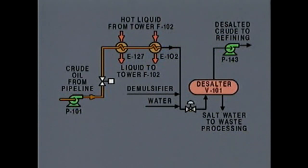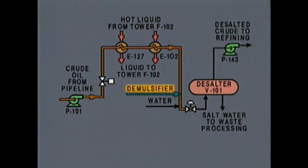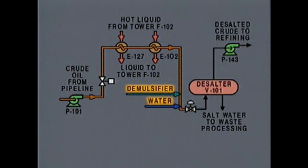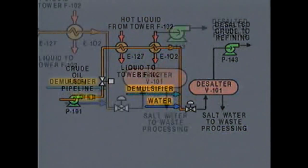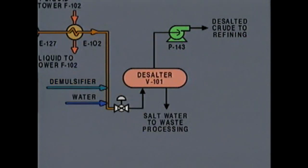As we trace the oil flow leaving heat exchanger E-102, we see that it flows past a demulsifier addition line and a water addition line. The demulsifier and water are added to the oil to help the desalter do its job. Next, the oil goes through a control valve that's operated by a pneumatic diaphragm actuator.